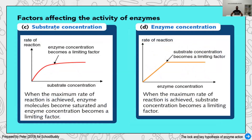Another two factors are substrate and enzyme concentration. Substrate is basically the item or component that sits on the enzyme. As substrate concentration increases, the rate of reaction does not increase much because enzyme concentration is limited. Even if you increase substrate concentration, there are fewer enzymes available to occupy the active site. Similarly, if you keep increasing enzyme concentration, the substrate becomes the limiting factor, so there is no point increasing enzyme when substrate is no longer available.